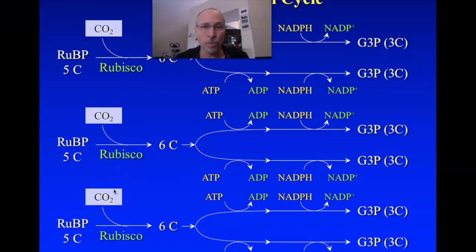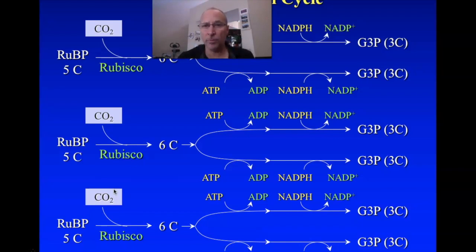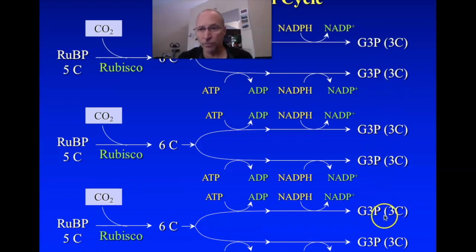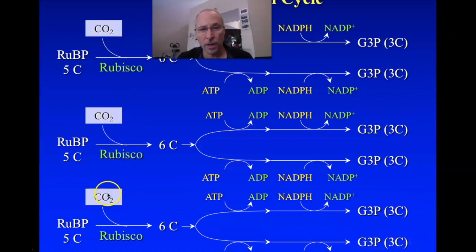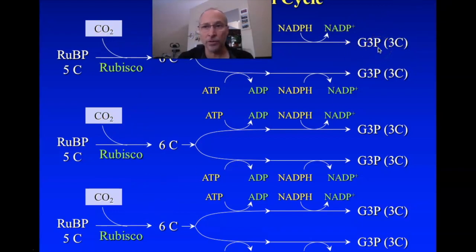I'm going to think about this in a way that is logically correct, even if fictitious in its details. Imagine these 15 carbons are on five G3Ps — that's still 15 carbons. The three new carbons from the three carbon dioxides ended up on this sixth G3P, representing the new three-carbon compound. I realize these carbons aren't actually on this exact G3P, but looked at this way, the logic is identical, and we can see that this G3P is special — it's new.